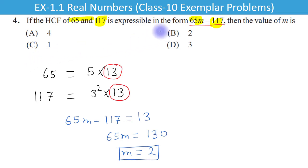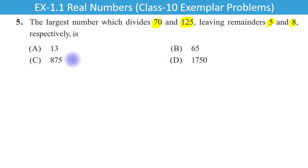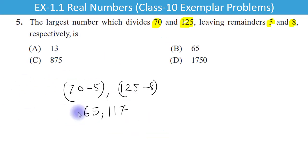Question 5: The largest number which divides 70 and 125 leaving remainders 5 and 8 respectively. Jo number 70 aur 125 ko divide karta hai to remainder 5 aur 8 aata hai. Yadi 70 mein se 5 remove kar den aur 125 mein se 8 remove kar den to wo number completely divide karega. 70 minus 5 = 65 aur 125 minus 8 = 117. In dono ka HCF nikalen to 13 aata hai. So option A is the right answer.